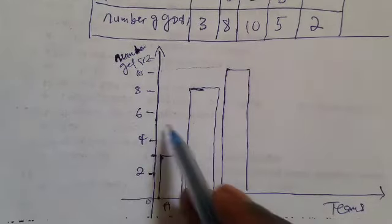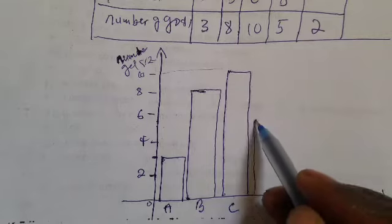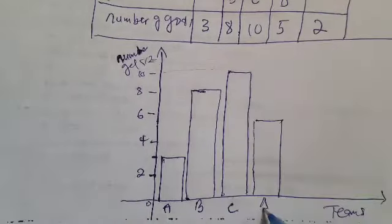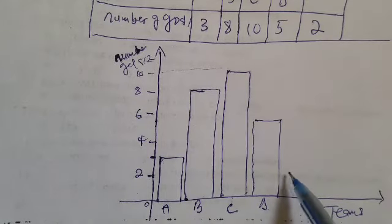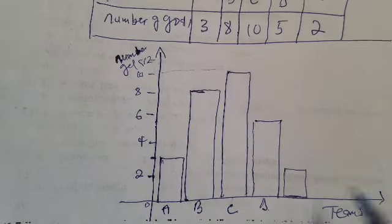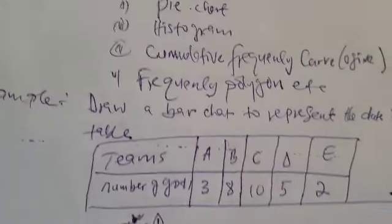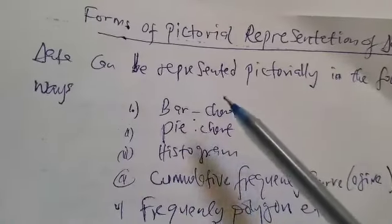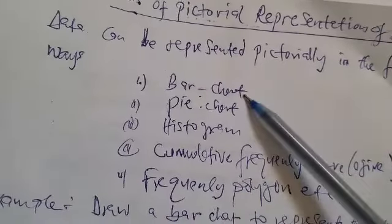Five is around here on the scale, so we draw Team D's bar up to five and write D here. Team E scored two goals, so we draw it up to two. This is a good example of a bar chart — a pictorial representation of data.